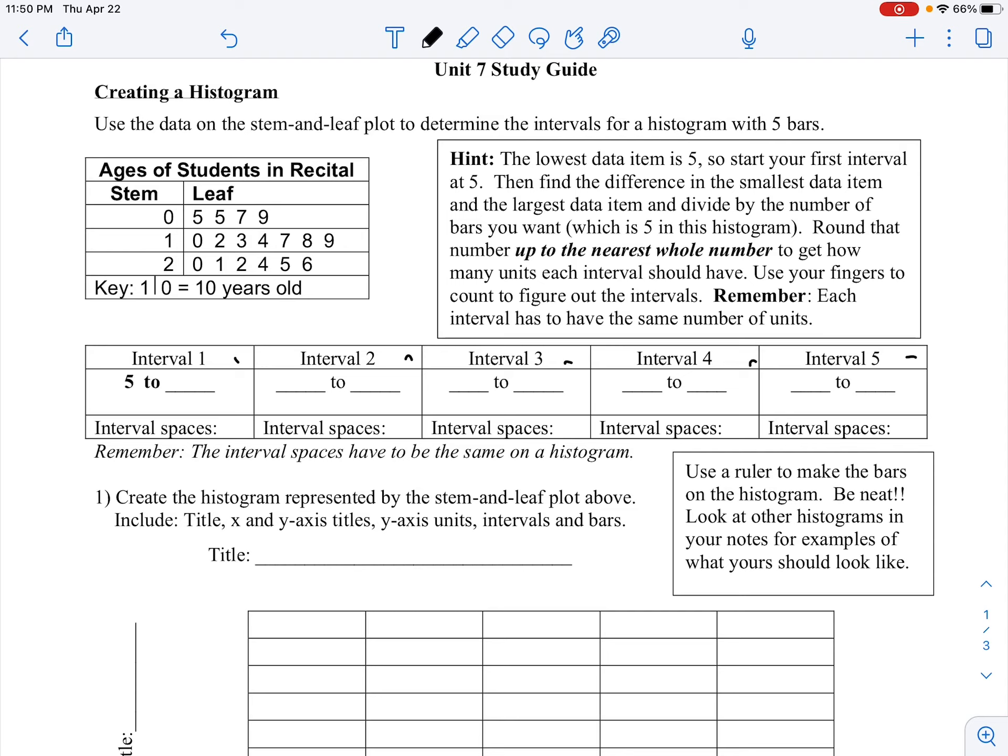Let's get started with making a histogram. We've got a frequency table here, so we'll use that information to make ourselves a histogram. It gives us a hint on where to start - the lowest data item is 5, so our first interval will start at 5. We want to find the difference in the smallest and largest data items, so our largest is 26 and our smallest is 5, so the difference is 21.